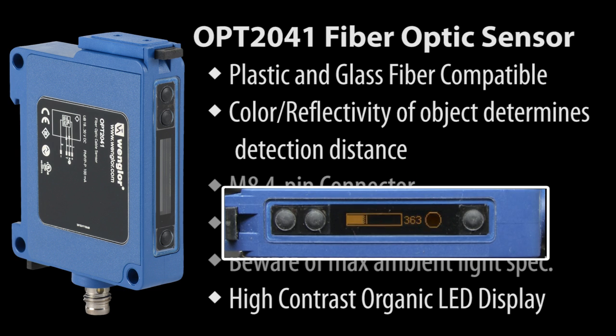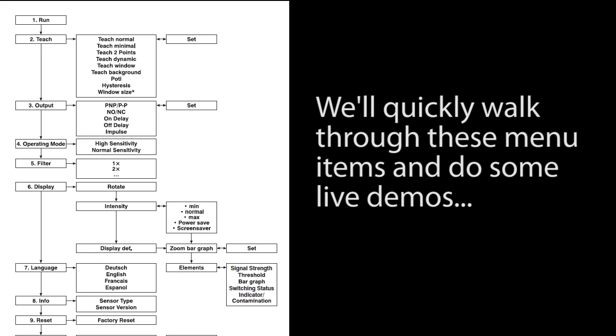If this output status is blinking, that's an indication that the signal is weak and the sensor optics might be dirty or fouled and need to be cleaned. The best part is you can customize the display to show only the items you want to see. Let's take a quick walk through the sensor's menu structure and do some quick examples of most of these features.